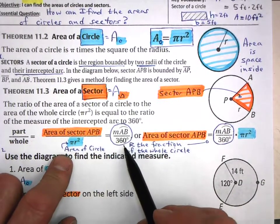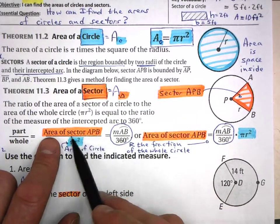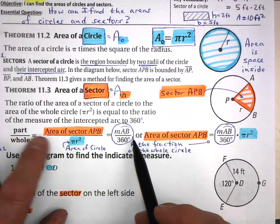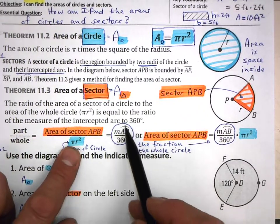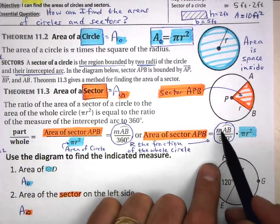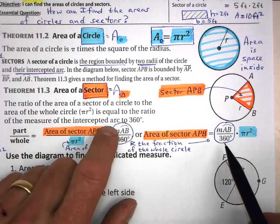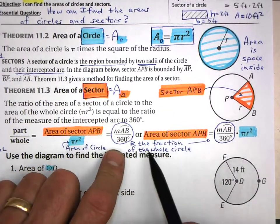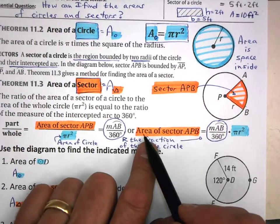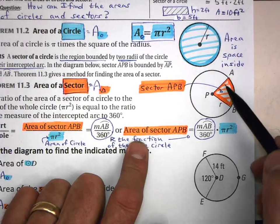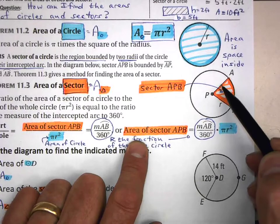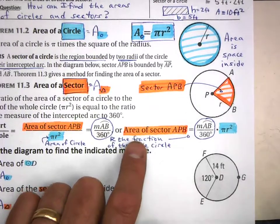This proportion is true. If we want to solve for just the area of the sector, we multiply both sides by the area of the circle. So: area of sector equals the central angle over 360 times the area of the circle. Think of the angle over 360 as the fraction of the whole circle — you only want this portion, this fraction of the entire circle.